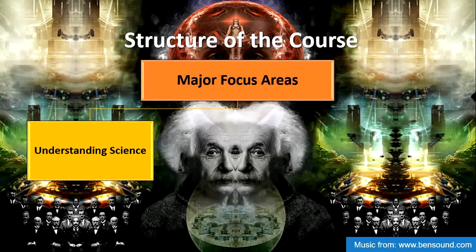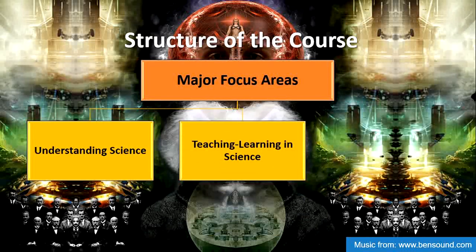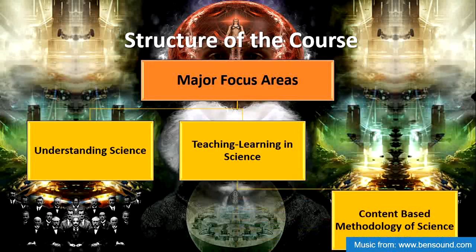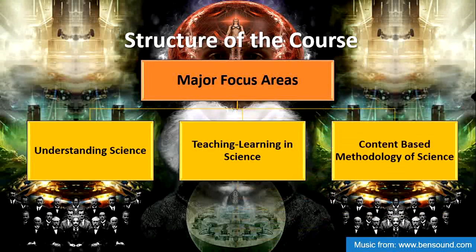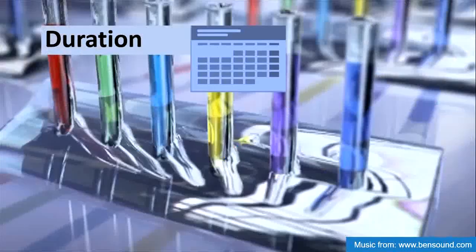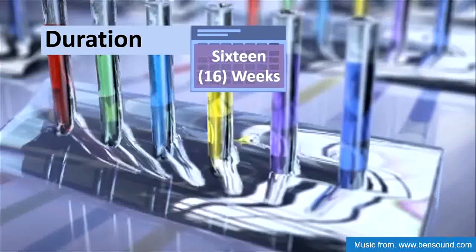Let us see what the structure of the course is. There are basically three major focus areas. The first is understanding science, in which we will talk about the nature of science, the myths related to the nature of science, and how science works. Then we will talk about various teaching and learning strategies, processes, methods, and resources. We will also help you deal with the content of science — how you as a teacher can deliver science content effectively in your classroom.